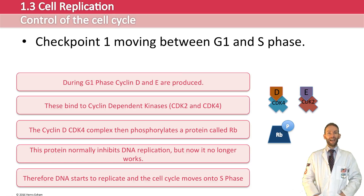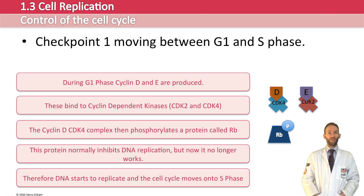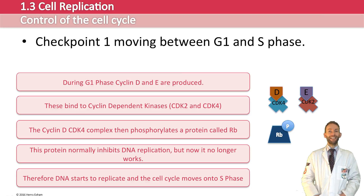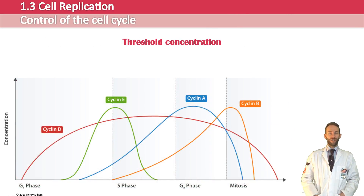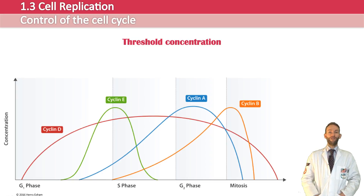So you can see how the process is controlled moving from G1 to S phase using these cyclins. There are four main types of cyclins in human cells, and unless these reach a threshold concentration, the cell does not progress to the next stage. You can see how these different cyclins build up and reduce in concentration to move through the cell cycle in this graph.